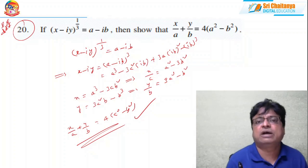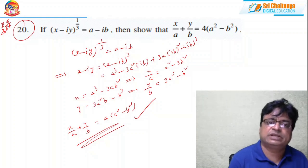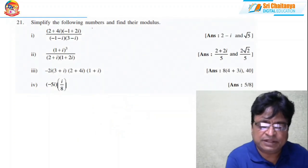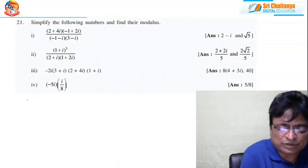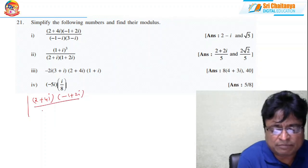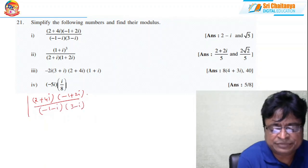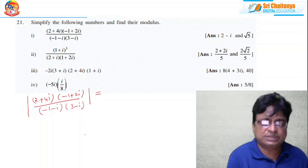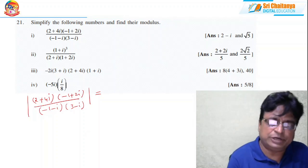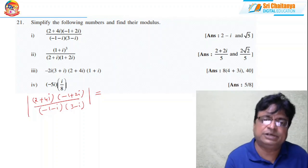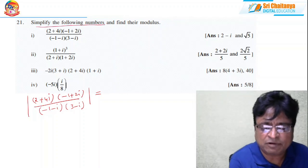From all these problems we have learned to extract results using basic operations with complex numbers. Coming to problem 21: simplify the following and find their modulus. You can either simplify by multiplying numerator and denominator first, or apply modulus properties directly: |z₁/z₂| = |z₁|/|z₂| and |z₁·z₂| = |z₁|·|z₂|. But since the question says 'simplify first, then find modulus,' read the question properly.